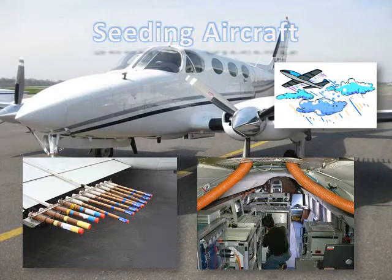Seeding aircraft are used to augment ground seeding operations. The flares attached to the plane retain a silver iodide solution, which is either fixed in place while the solution is burned, or dropped into a cloud region.